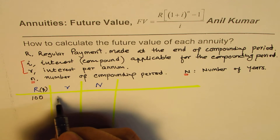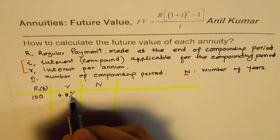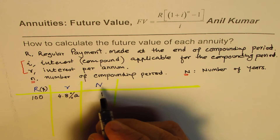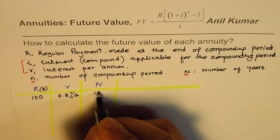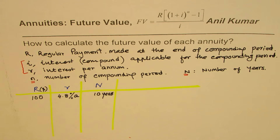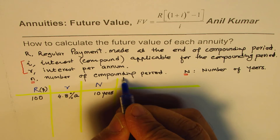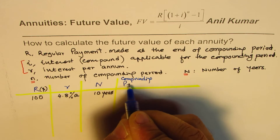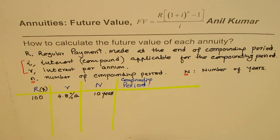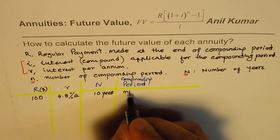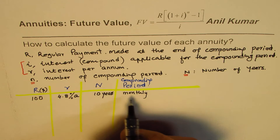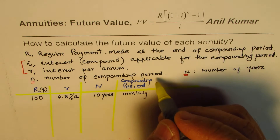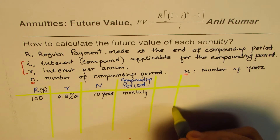Let's take R as 100 dollars, the rate of interest as 4.8 percent per annum, and the number of years as 10 years. An important term here is the compounding period. The compounding period could be monthly. Monthly means in one year you deposit 100 dollars 12 times and you get interest compounded 12 times.